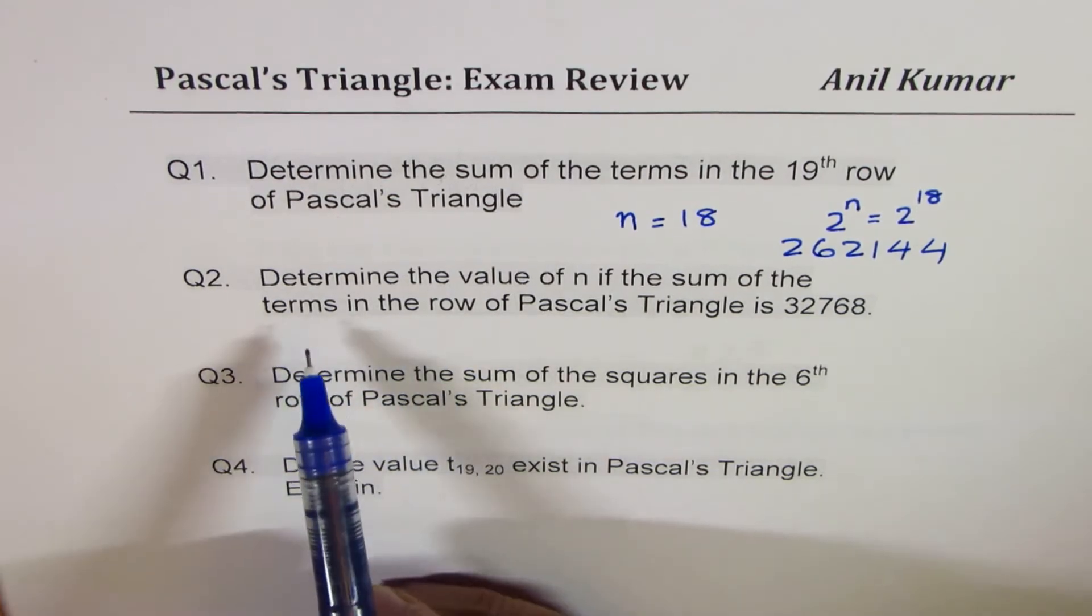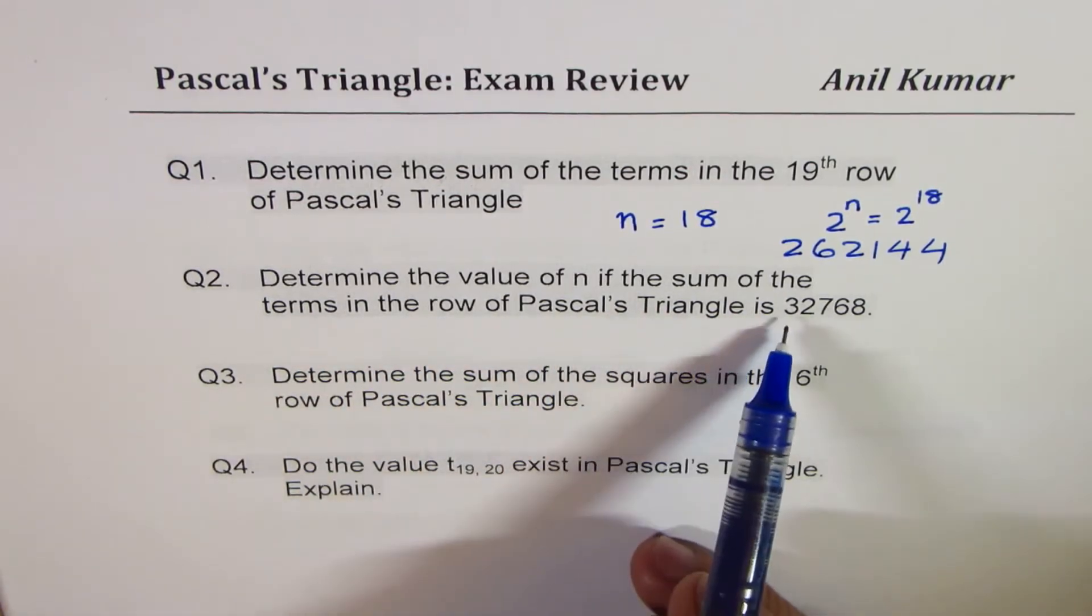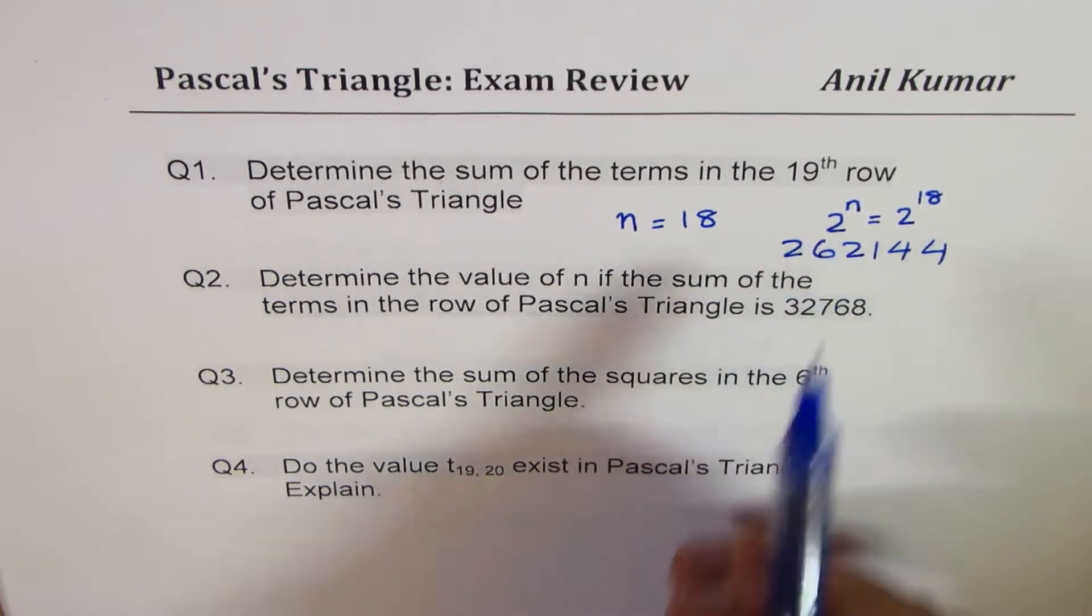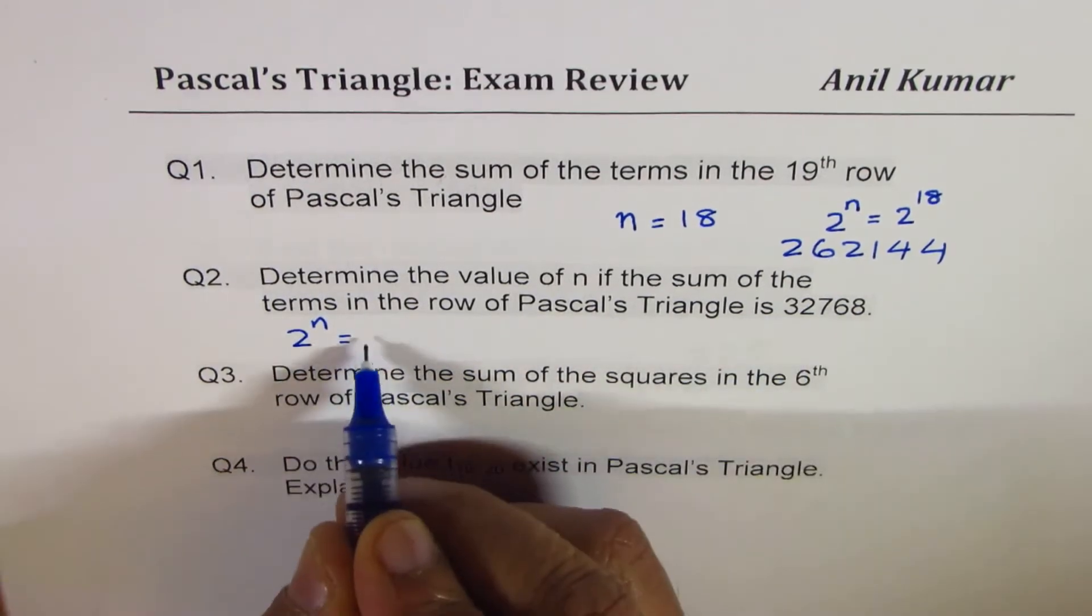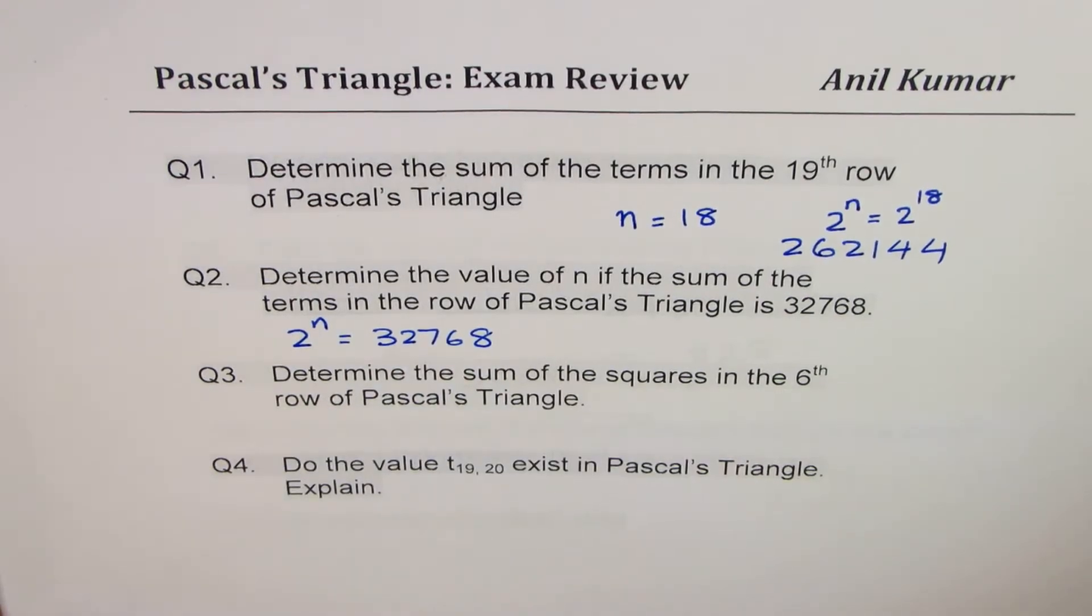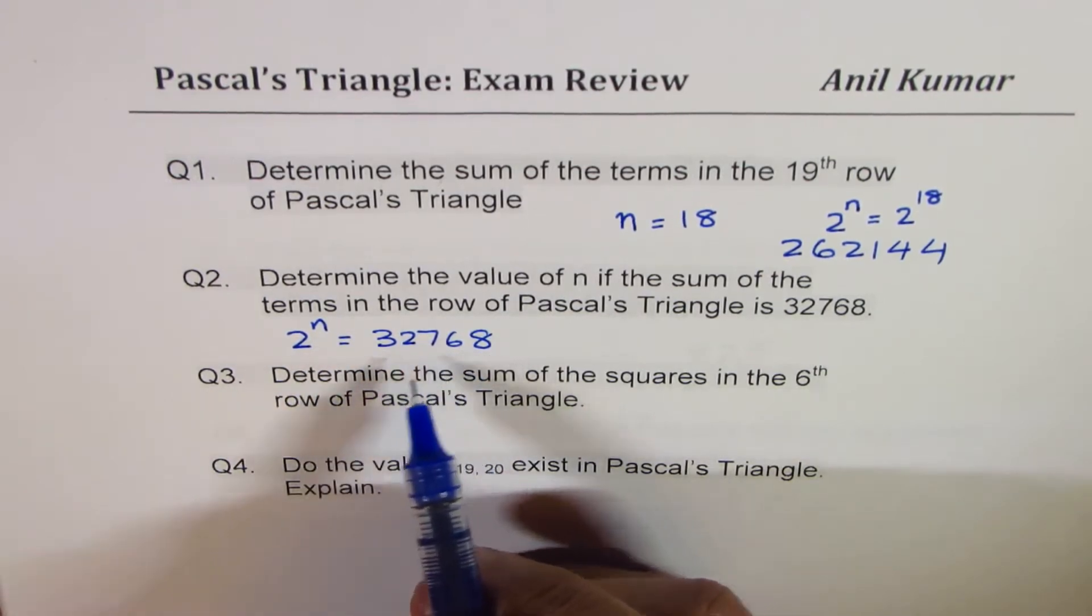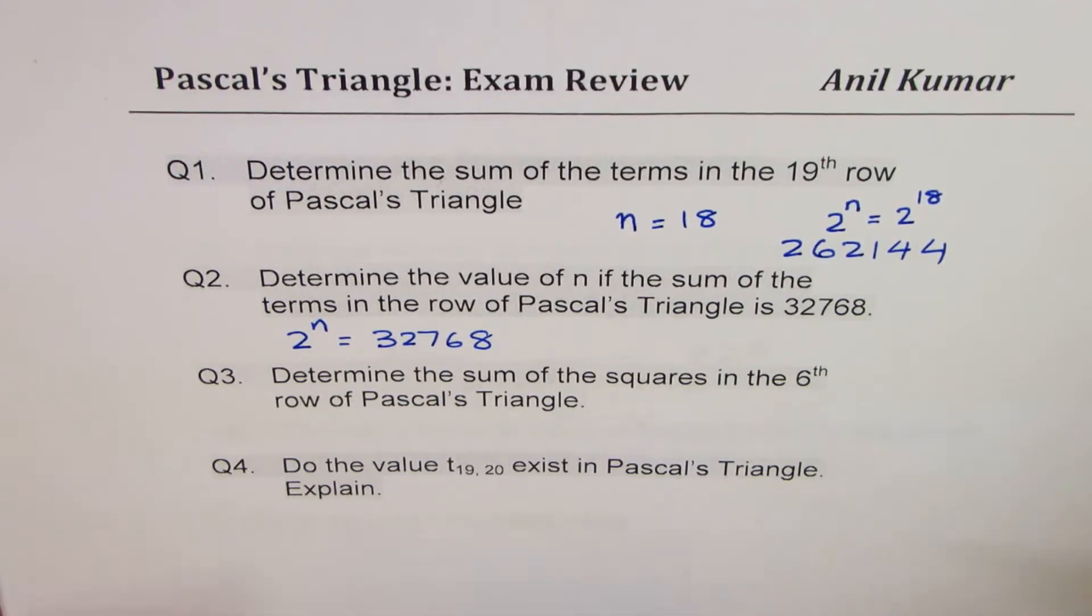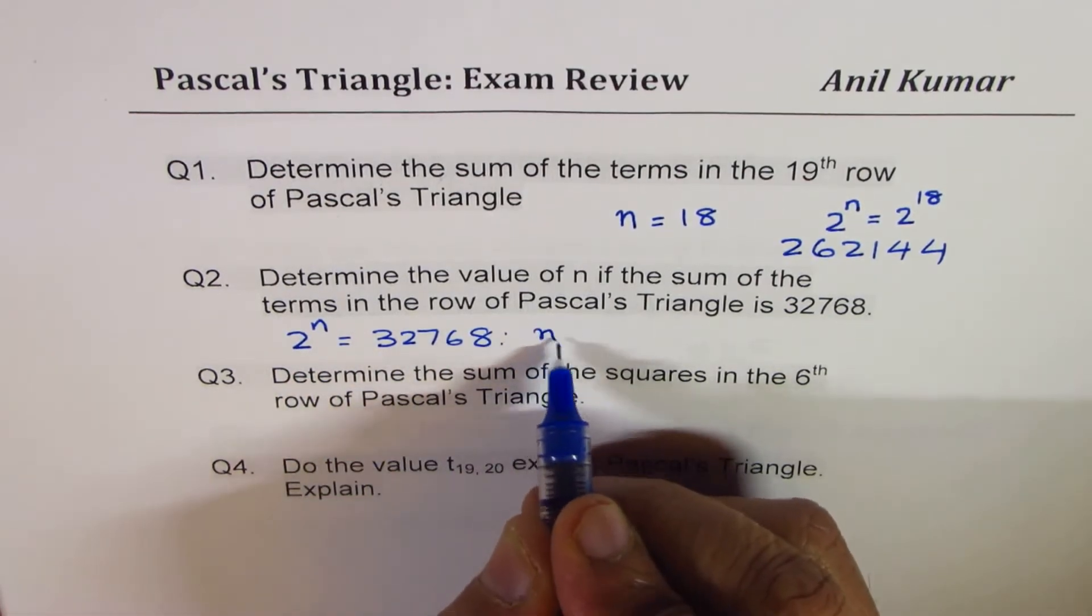Question number two. Determine the value of n if sum of the terms in the row of Pascal's Triangle is 32768. So we will again use the same formula, which is 2 to the power of n is equal to 32768. Now, one way, of course, is that keep on dividing this by 2 and see how many times will 2 get into this.